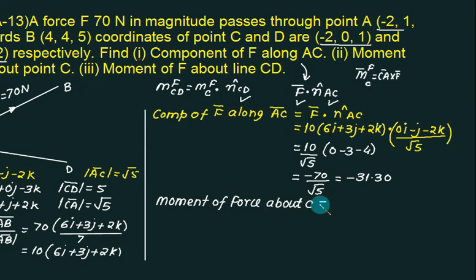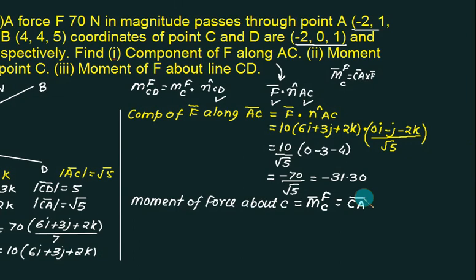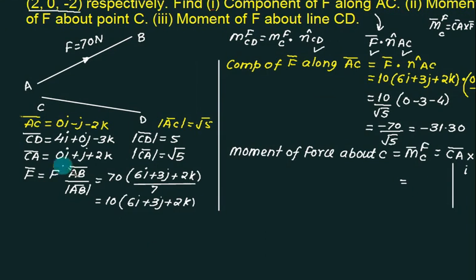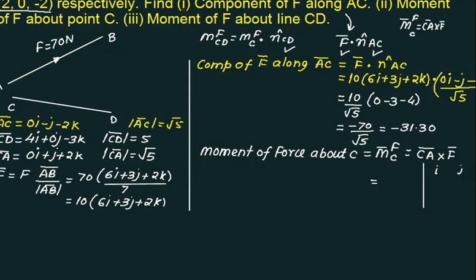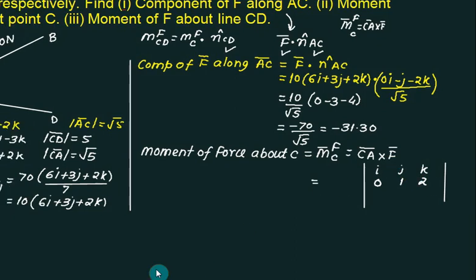So moment of force above C. B is written as moment of force above C. So my first letter is C. And for F I can select any letter either A or either B. So this one is CA. Cross F bar. So you can fill this information using the matrix. We want CA cross. So what is CA? Is it ready for us? This one is 0, 1, 2. CA is 0, 1, 2. And what is F bar? F bar is 10 outside. This one is 6, 3, 2. 6, 3, 2. Solve this determinant. That is the moment of force above C. So final answer is 10 into minus 4i plus 12j minus 6k.